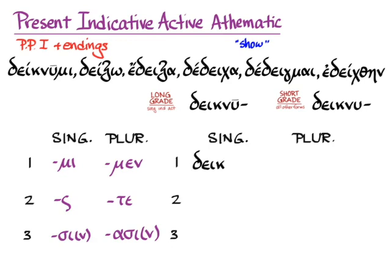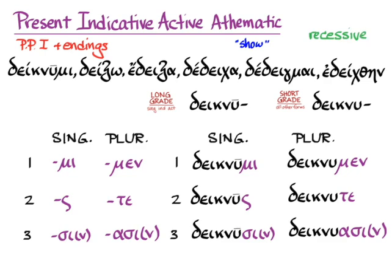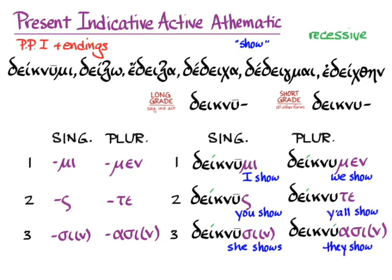Applying the athematic present indicative active endings: deiknūmi, deiknūs, deiknūsi (with a nu movable) — all using the long-grade stem. In the plural, with the short-grade stem: deiknumen, deiknute, deiknu-asi. The accent is recessive: deiknūmi (I show), deiknūs (you show), deiknūsi (she/he/it shows), deiknumen (we show), deiknute (y'all show), deiknu-asi (they show).